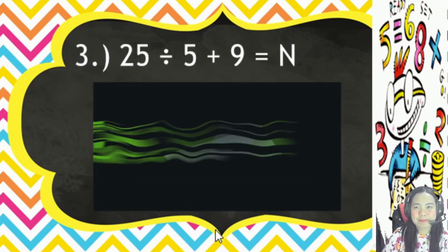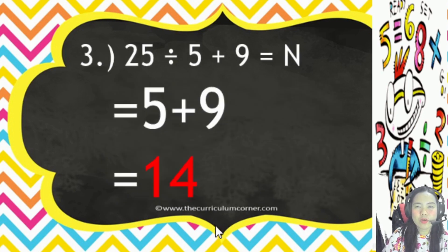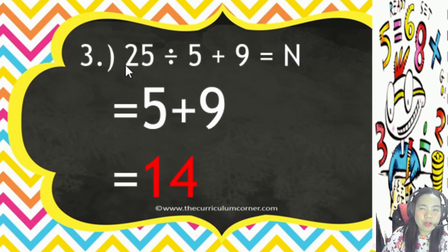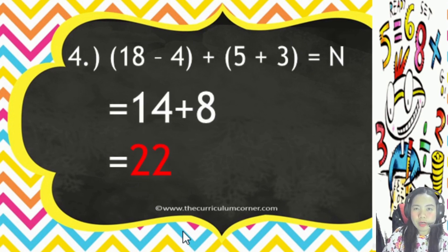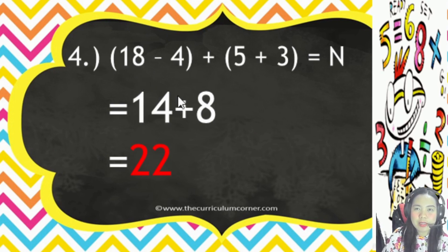Number 3: the expression involves division and addition, so we do division first. 25 divided by 5 equals 5, then plus 9. So 5 plus 9 equals 14. Number 4: solve inside the parentheses first. 18 minus 4 equals 14, then 5 plus 3 equals 8. 14 plus 8 equals 22.